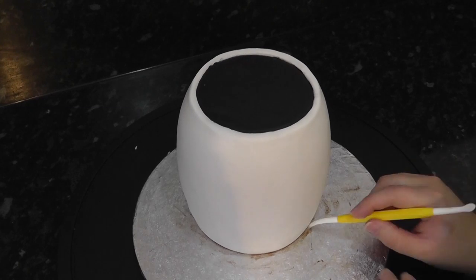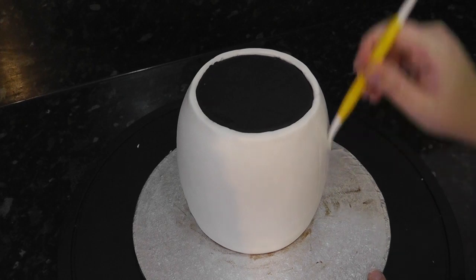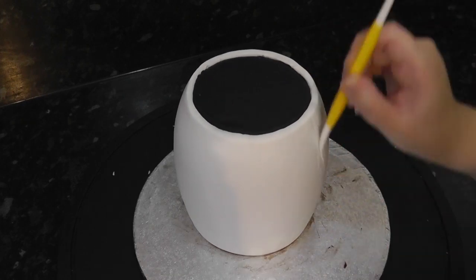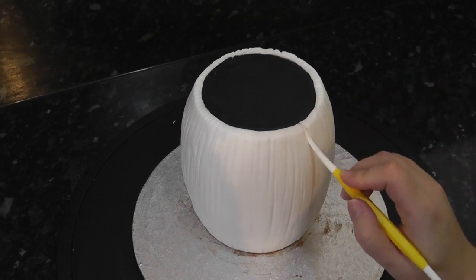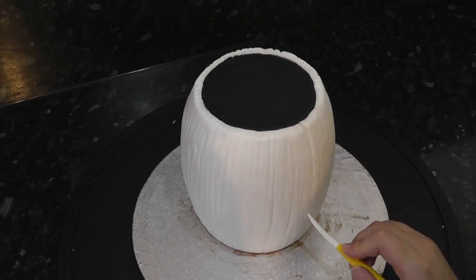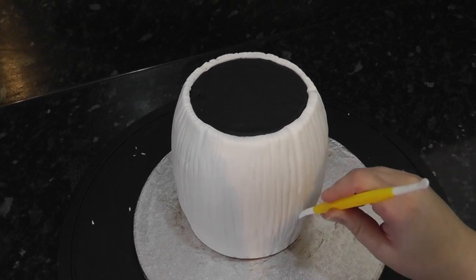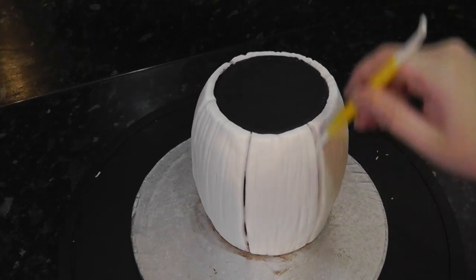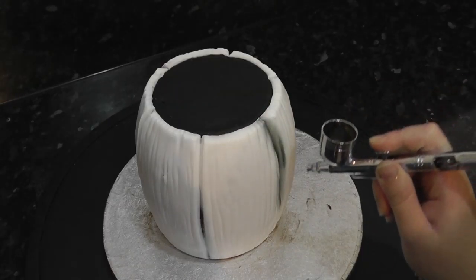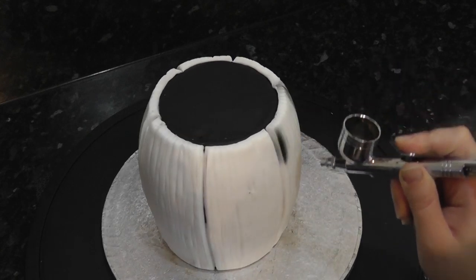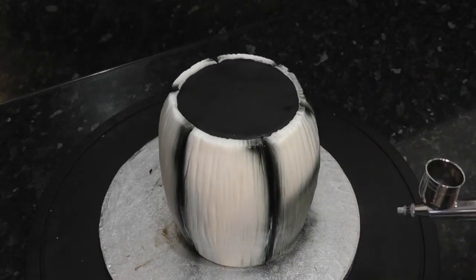Taking a dresden tool, score in rough lines all around the cake for texture. After that, score in some deep ones to separate the panels. With black airbrush colour, fill each crease before roughly covering the whole cake. This is great for practising on as it doesn't have to be neat.